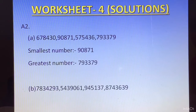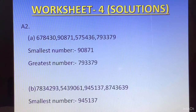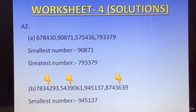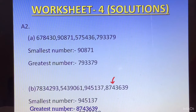The next question: again we have 4 numbers. For the smallest, it is the number with the fewest digits — 945137 with 6 digits. Then, out of the remaining three 7-digit numbers, we compare the first digit: 7, 5, and 8. Since 8 is the greatest, the greatest number is 874363.